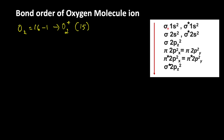Here you can see the table which shows the filling of molecular orbitals based on increasing energy level. After filling the sigma 1s bonding molecular orbital, electrons enter into the sigma star 1s antibonding molecular orbital, then sigma 2s and sigma star 2s. Using this information, let us write the electronic configuration of the oxygen molecule ion.